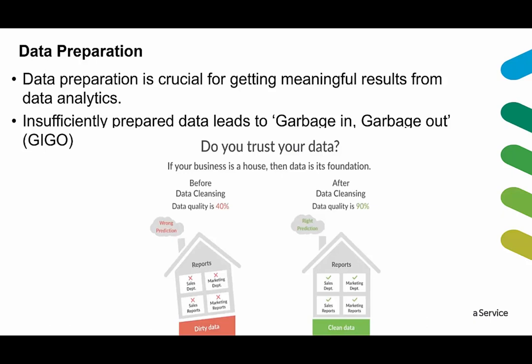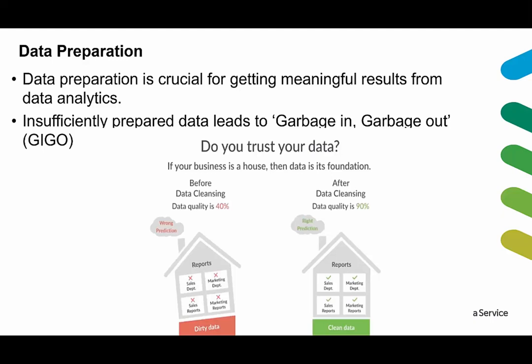Insufficient data preparation leads to garbage in and garbage out — also known as GIGO — a computer science acronym implying bad input will result in bad output. If your business is a house, the data is its foundation. Before cleansing, data quality might be only 40%, and if you do anything on it, you might get wrong predictions. However, with proper data cleansing, data quality can be improved to 90%, giving you the right predictions and meaningful insights.